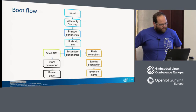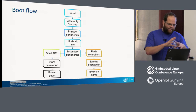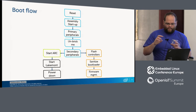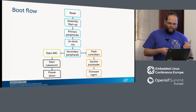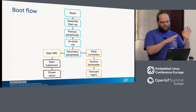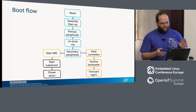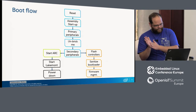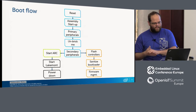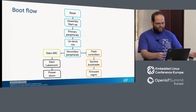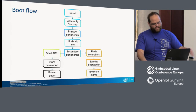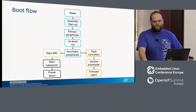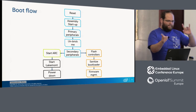The general boot flow: when the SoC starts, it begins at the reset vector. Assembly startup sets up the GDT, interrupts, transitions to 32-bit mode, sets up cache if applicable, and initializes the stack pointer. It then does primary peripheral setup — clock modes and trim code calculations — followed by the unbrick check via OpenOCD and JTAG, and then secondary peripheral setup: IDT and IRQs.